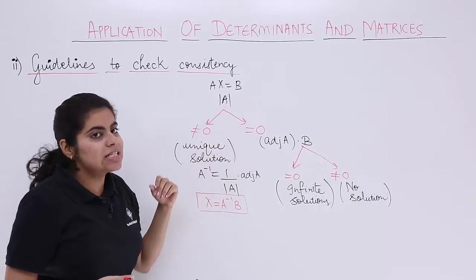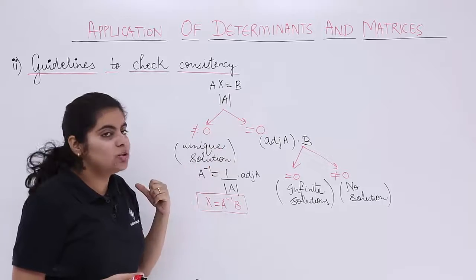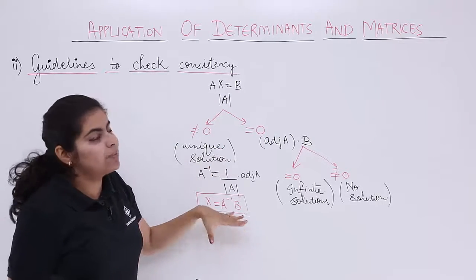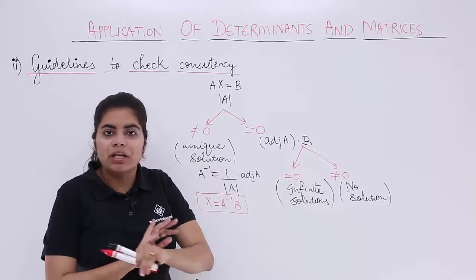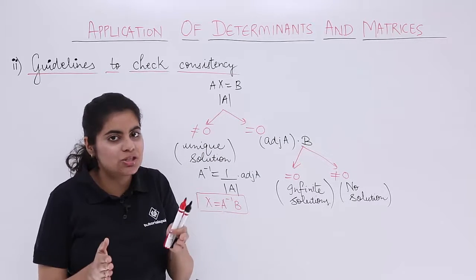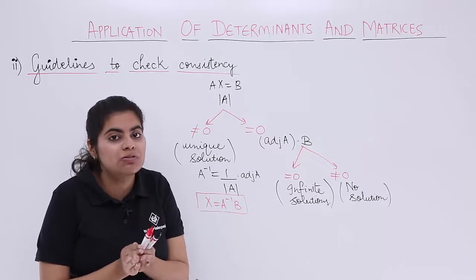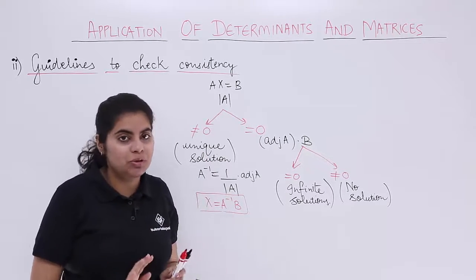Similarly, when del A is not equal to 0, unique solution is there and unique solution is given by x equals A inverse B. This we have done in the previous video. In case you are not following, please do watch the previous video. Only then you will understand this video.